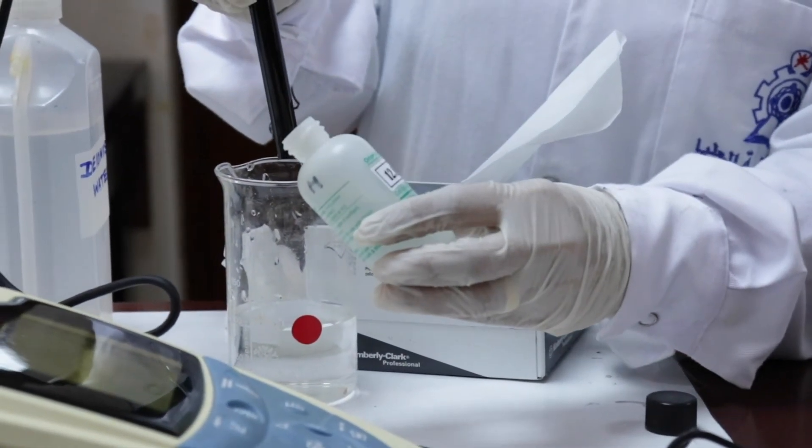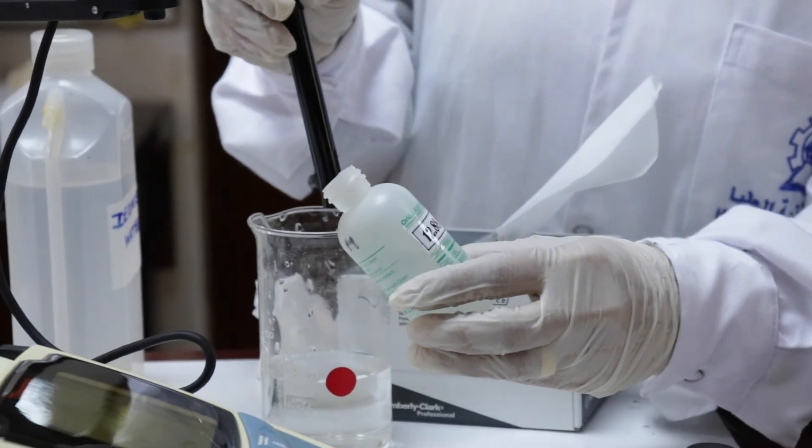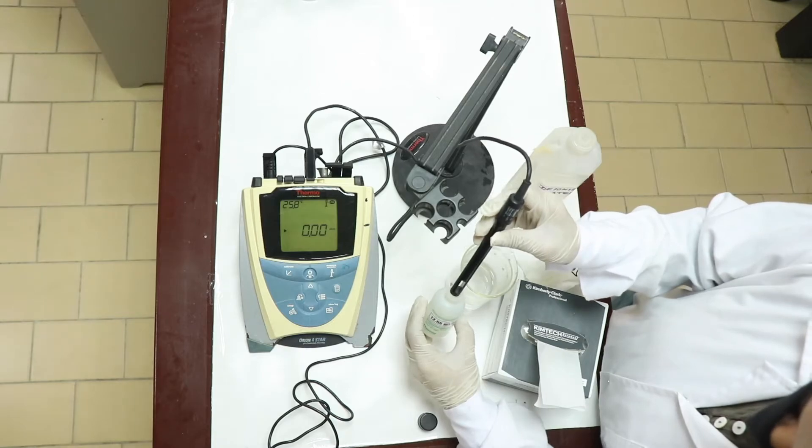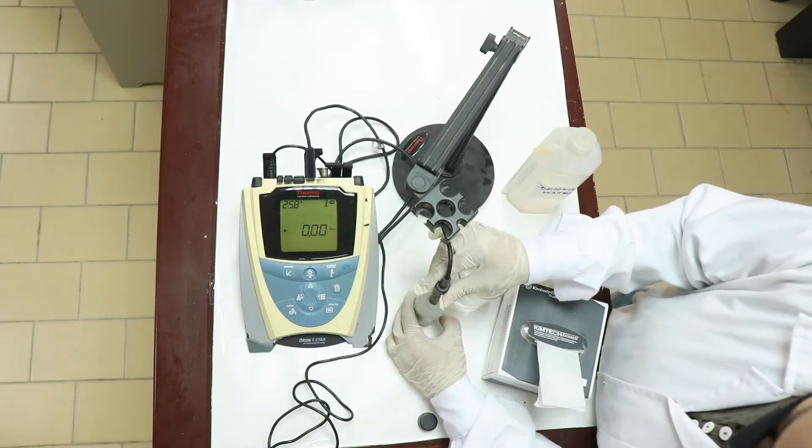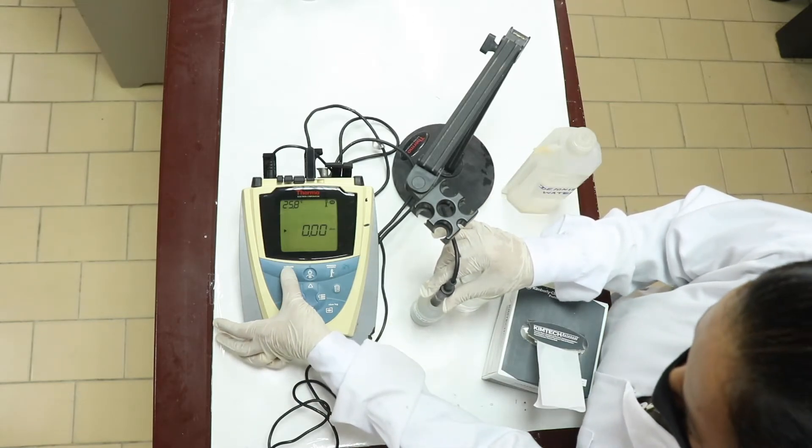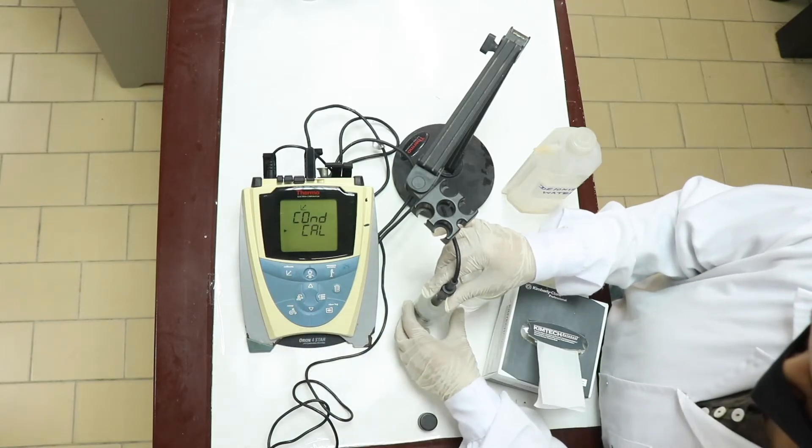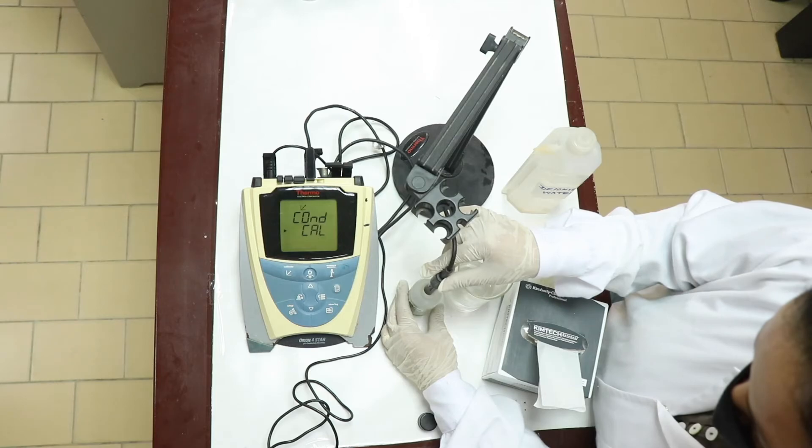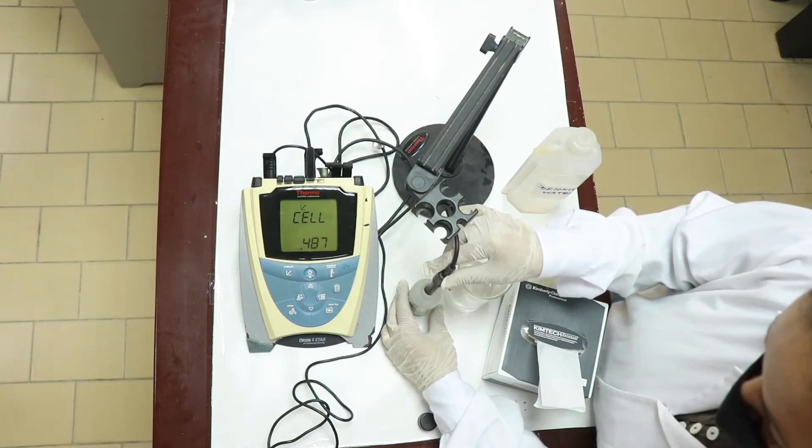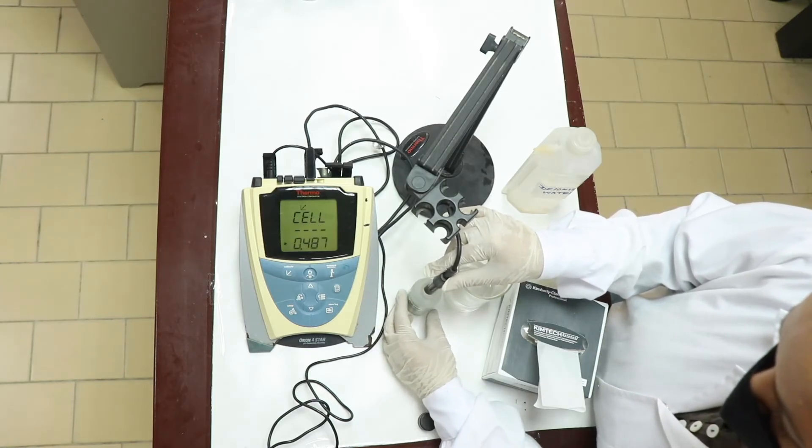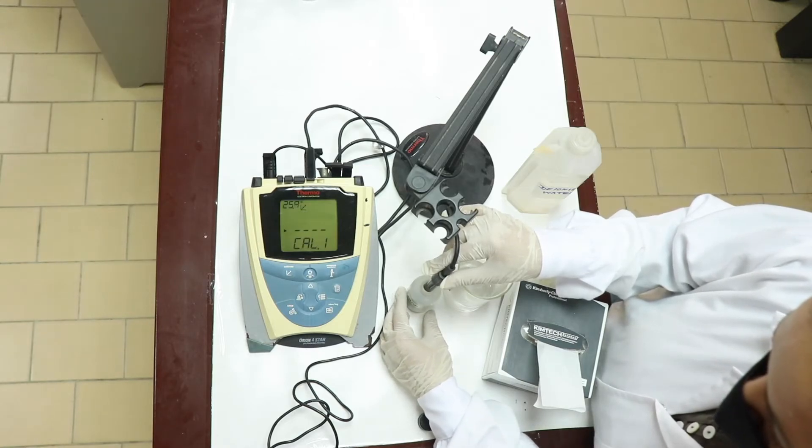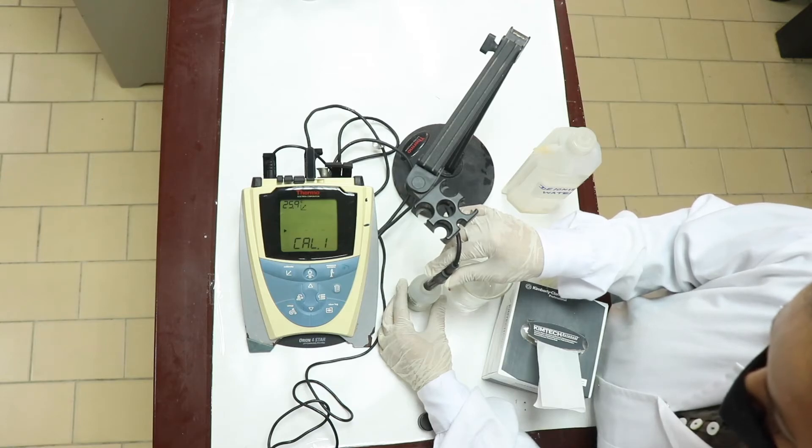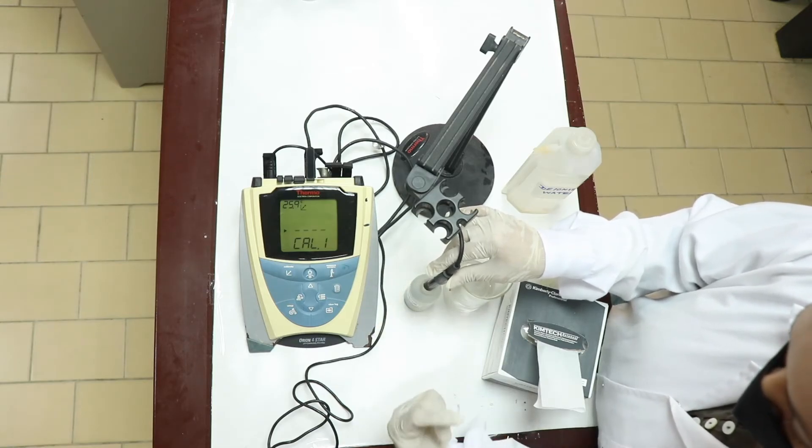Open the other solution whose conductivity is, it is written here, 12.88 millisiemens per centimetre. Dip it into this solution and again you calibrate it. Again, it is appearing conditional calibration. It is calibrating the second solution now whose value is higher than the first.